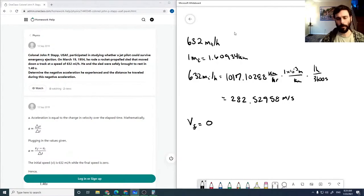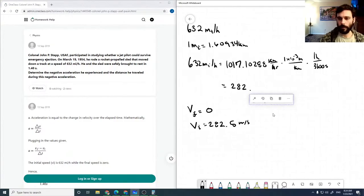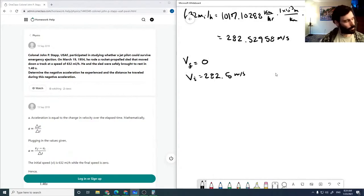Now our VF is 0 and our VI is 282.5 meters per second. So our acceleration is VF minus VI over T.